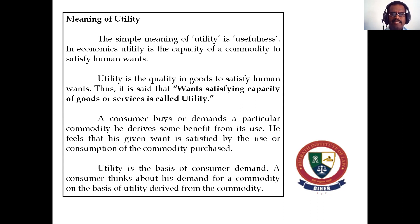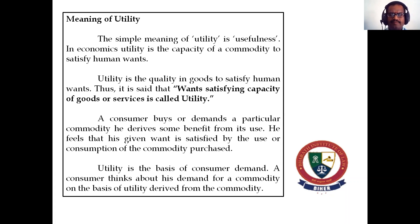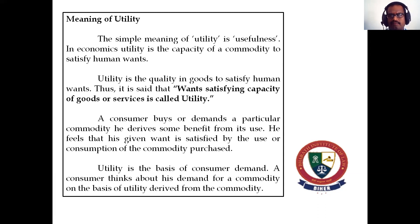A consumer buys or demands a particular commodity and derives some benefit from its use. He feels that his given want is satisfied by the use or consumption of the commodity purchased. Wants are satisfied with the help of consumption and use of goods and services. Utility is the basis of consumer demand — a consumer thinks about his demand for a commodity on the basis of utility derived from it, which can vary from time to time.